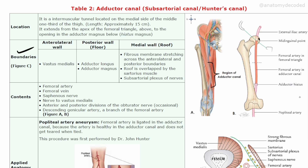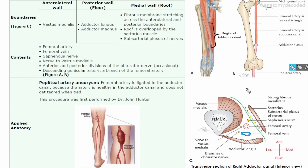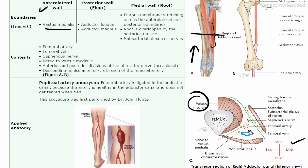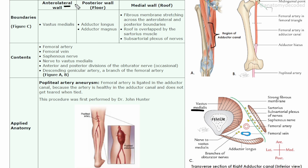To understand the boundaries of the adductor canal, we look at a cross section of the right thigh viewed from the inferior aspect. Orient yourself using the orientation marks on the image. The anterolateral wall is formed by vastus medialis — this muscle is anterior and lateral to the adductor canal, hence the 'anterolateral' boundary. Students sometimes get confused because the muscle is named 'vastus medialis' yet forms the lateral boundary, but anatomically it sits lateral to the canal.